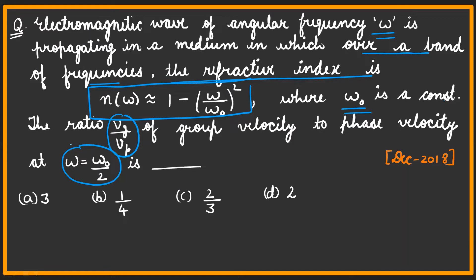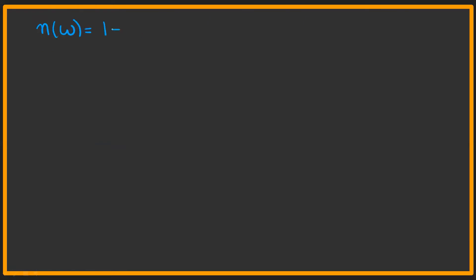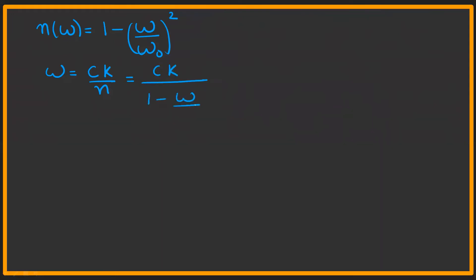We need to calculate ω/k and dω/dk. The refractive index is n = √(1 − (ω/ω₀)²). We know that ω = ck/n. Substituting the value of n, we get ω = ck / √(1 − (ω/ω₀)²).